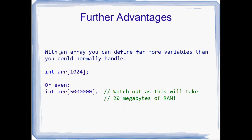Things quickly get out of hand if you're declaring separate variables instead of using arrays. Say you want to declare 1024 integers called A0 all the way up to A1023 — it's going to be extremely difficult to program that way. But it's really easy with an array: just say int ARR[1024] and C++ gives you the RAM. You could even make an integer array of five million, which would be completely impossible with separate integers, but with an array it's perfectly fine — though that's about 20 megabytes of RAM, so make sure you actually need an array that size.